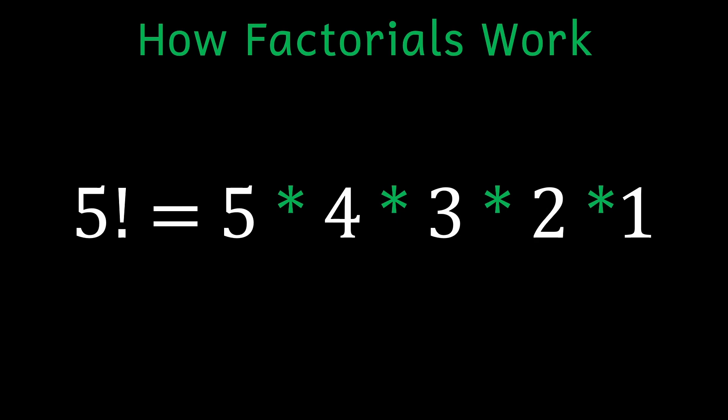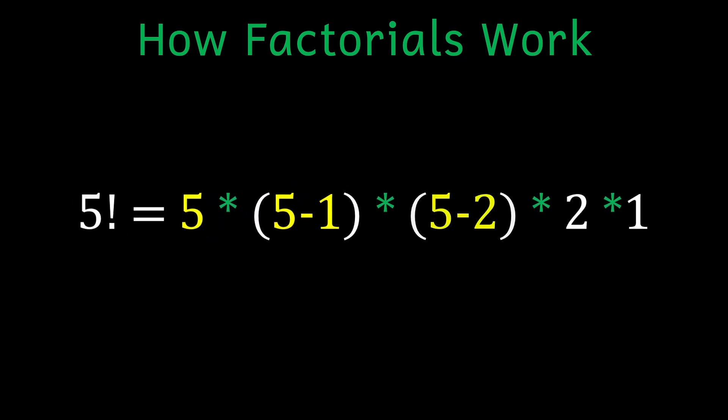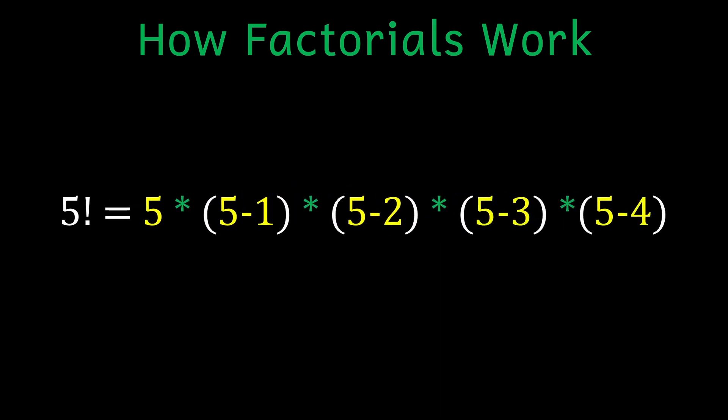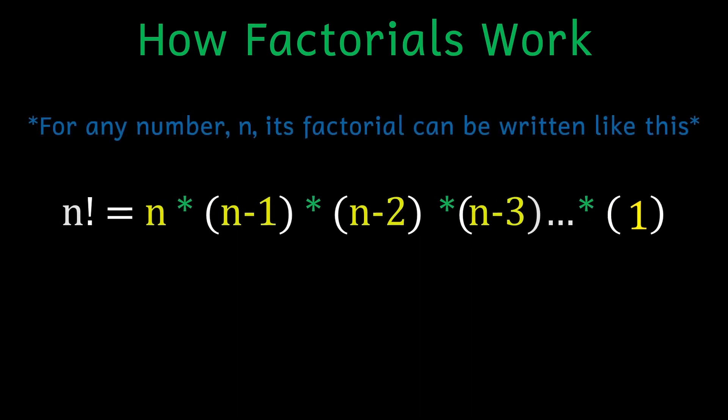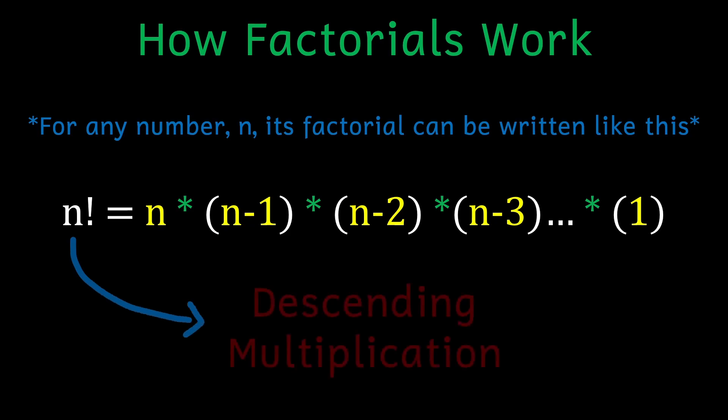Another way you could look at this process is taking five, then multiplying it by five minus one, then five minus two, and so on until the number in the parentheses is one. And with this perspective, you can probably see why it encapsulates the idea of descending multiplication.